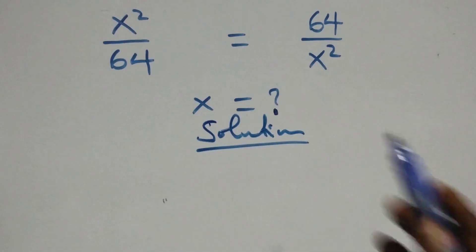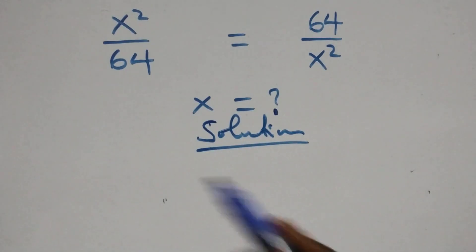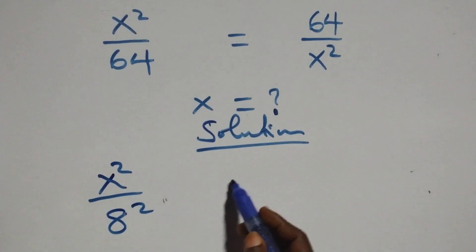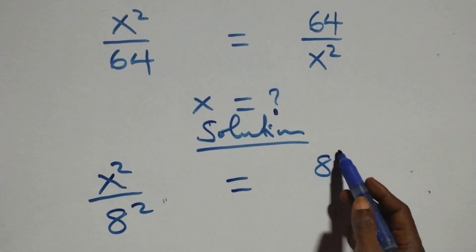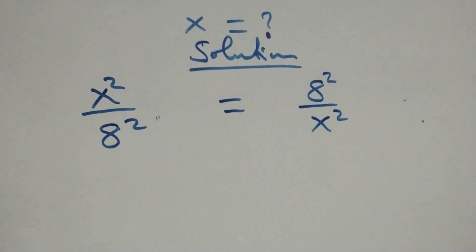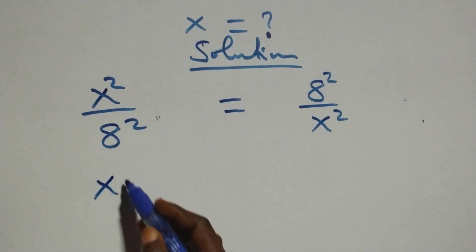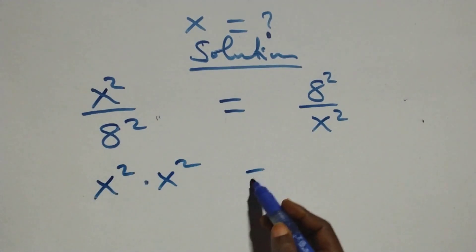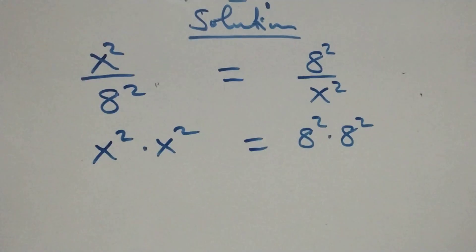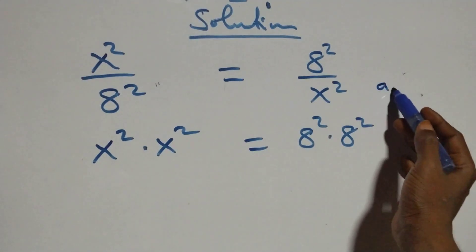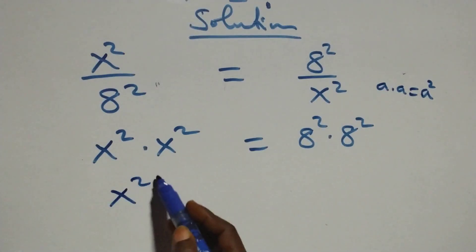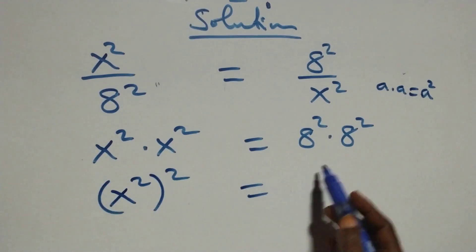What we have here we can write as x squared over 64 — that's 8 times 8, which we write as 8 squared — equals 8 squared over x squared. The next step: we cross-multiply, so x squared times x squared equals 8 squared times 8 squared. Using the rule a times a equals a squared, we get x squared squared equals 8 squared squared.